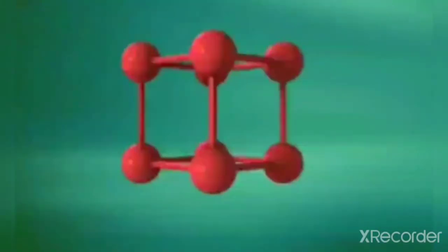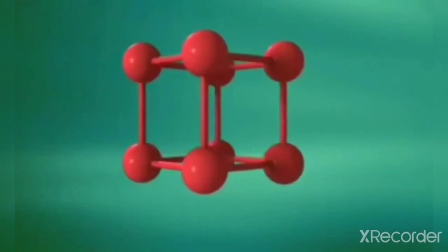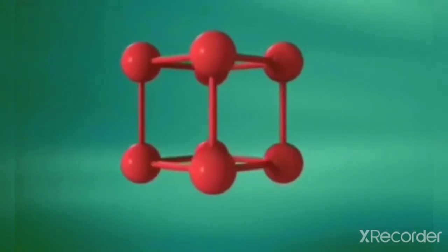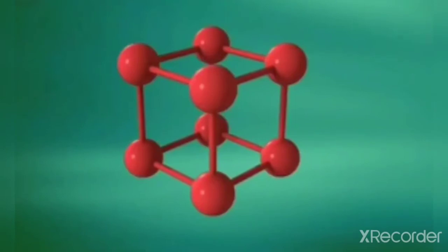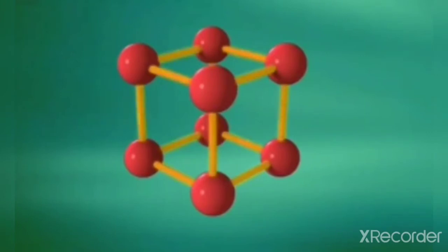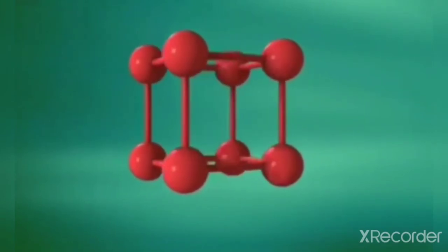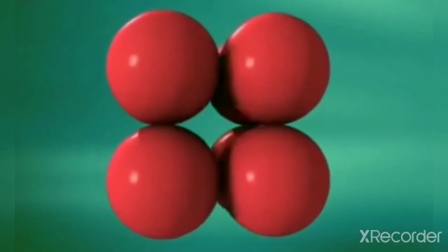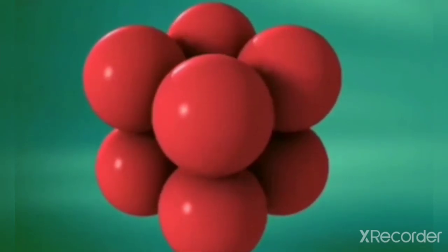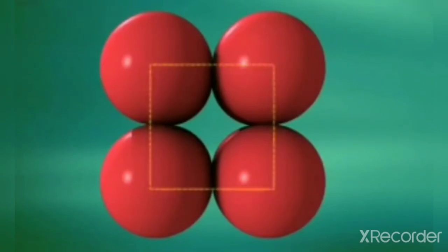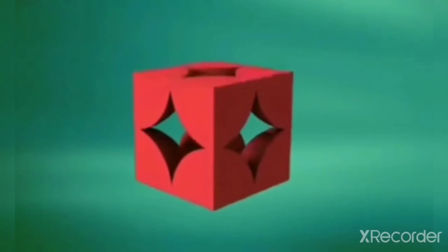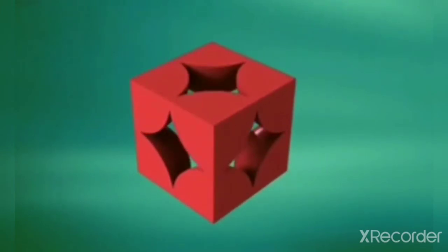A primitive or simple cubic unit cell consists of eight atoms at the eight corners of the cube. The lines joined between atoms are only to bring out the geometry of the lattice; in reality the atoms are packed much more closely together, as shown in the visuals. The atom touches along the edges of the unit cell. It is observed that only a part of the atom exists at each corner, not fully.